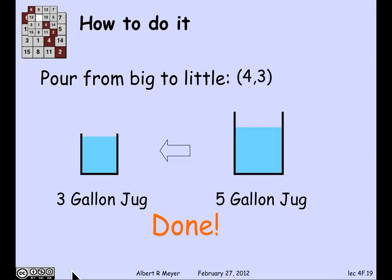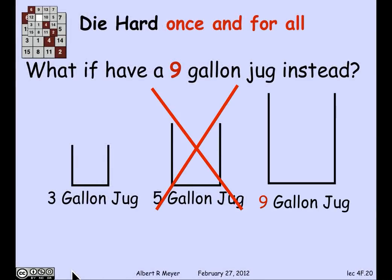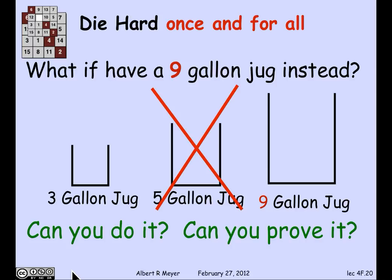The point of this exercise is really just to practice how the moves work and what the states are. But the question that I want to raise is suppose that we want to have a die hard once and for all scenario in which we're tired of the remakes of these movies. We propose that in the next movie that Simon, if he's still around, offers an alternative challenge where instead of a 3-gallon and a 5-gallon jug, there's a 3-gallon jug and a 9-gallon jug. Now the question is, can you get 4 gallons into the big jug by pouring back and forth with rules like these? Or can't you? And can you prove it?